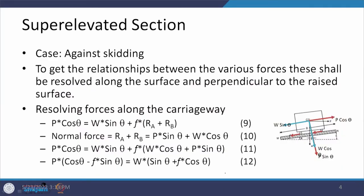Starting with the super elevated section regarding skidding, towards the end we discussed about the various forces which are acting, as also being shown again here. There is a centrifugal force acting outwards — you have an outer side and inner side — the weight of the vehicle acting vertically downwards, and a frictional force along the surface of the pavement in the lateral direction. When we talk about skidding and overturning in the super elevated cases, these forces need to be resolved parallel and perpendicular to the surface.